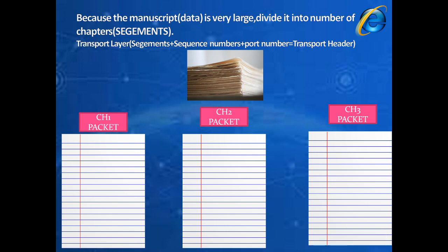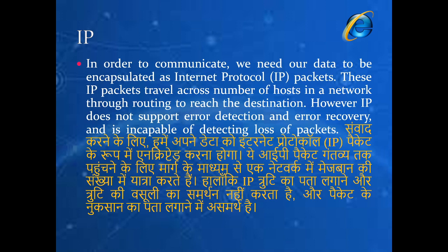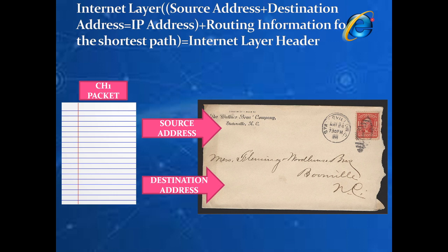At the Internet Layer, IP encapsulates the packets with a header containing all address details. Just like a chapter is put into an envelope with the source address and destination address written on it, our packet gets the source address and destination address added by the Internet Protocol. So another header is added at this layer as well.